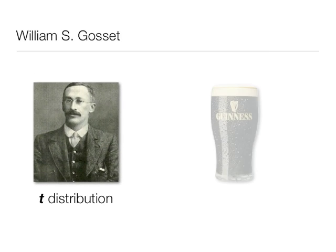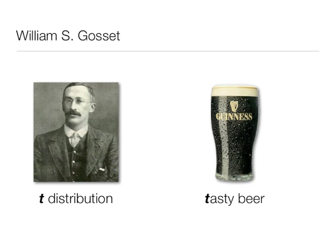Normally I don't talk about things like this, but this is William Gossett, and what makes him interesting is he actually used the t distribution to help improve Guinness beer where he worked. So he helped make tasty beer.